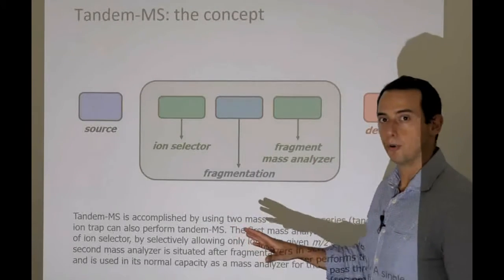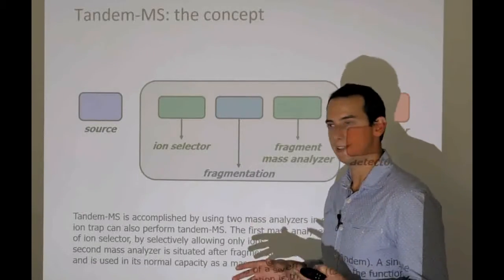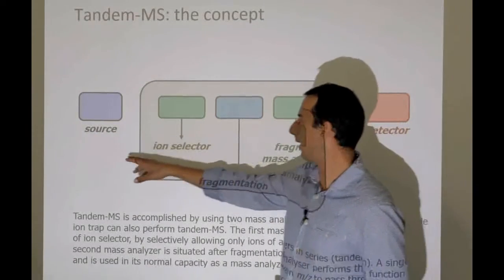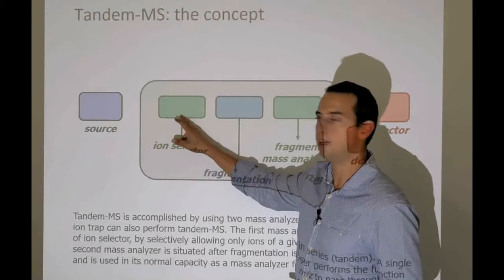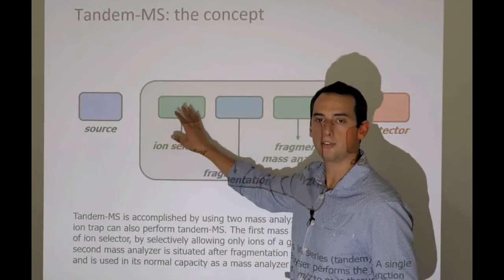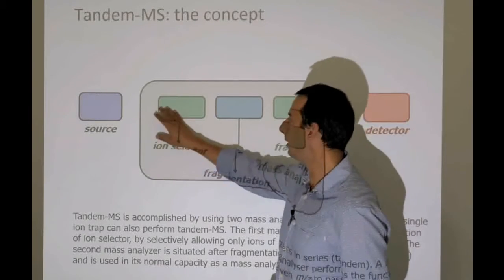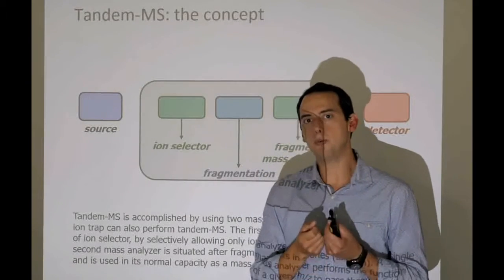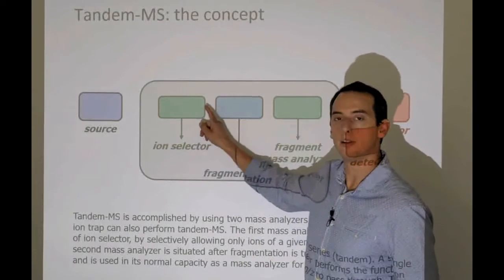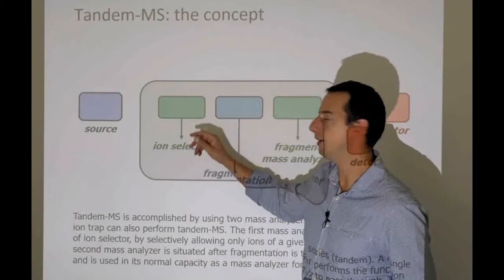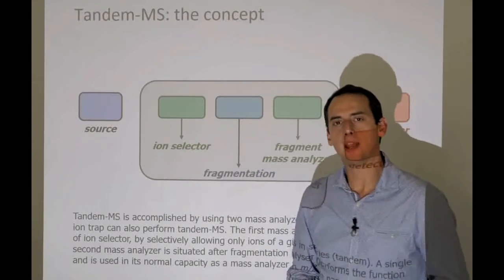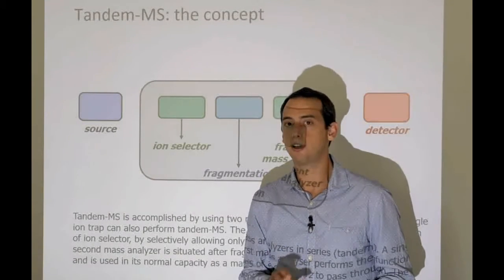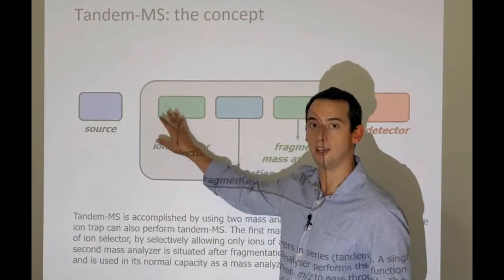What happens in tandem mass spectrometry is that we literally use two stages of mass spectrometry in sequence. Again, we have a source, can be electrospray or MALDI, and that source is going to create ions. These ions are then going to go into a first stage of mass spectrometry. Here we use a mass analyzer, not so much to measure the masses of the ions that come in, but to make sure we only have one mass that makes it through this particular ion selector.